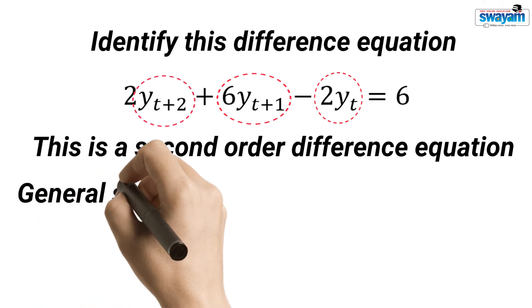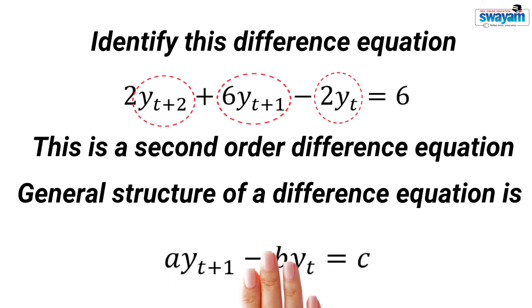So the general structure of a first order difference equation may be written like this. A, B and C are constants.